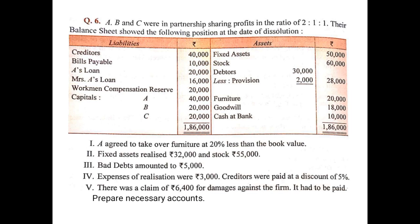Debtors is given 30,000 minus provision 2,000, with a net value of 28,000. Very important: if there is any asset where provision is made, we do not transfer the net value. Rather, we transfer the book value separately and the provision value separately. So the provision of 2,000 will be transferred on the credit side of the realization account as: by provision for doubtful debts, Rs. 2,000. And debtors at 30,000 will be transferred on the debit side: to debtors 30,000.